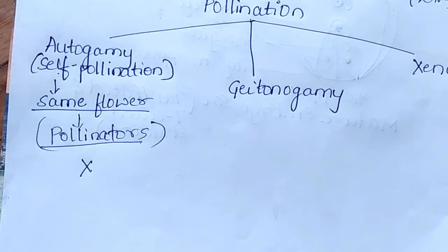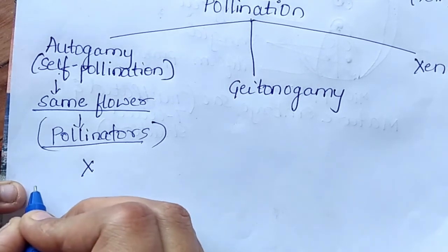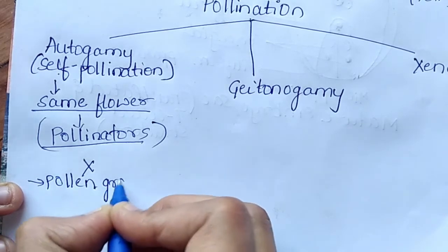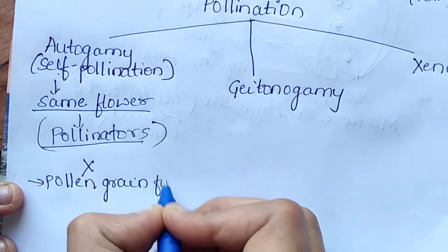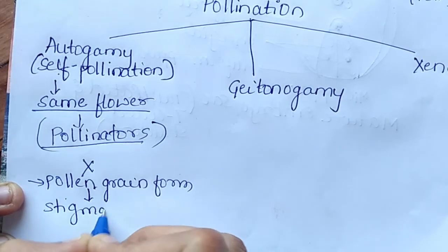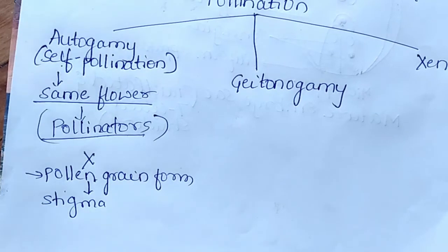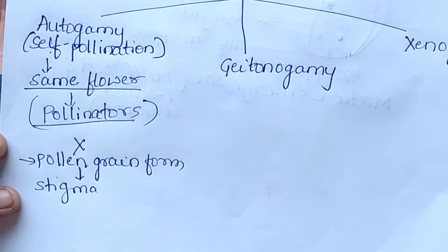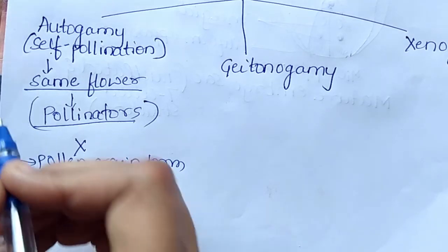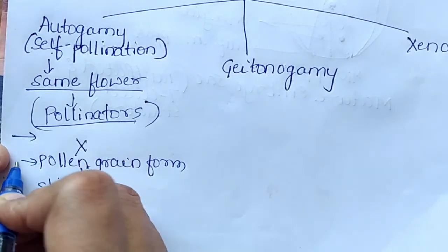For autogamy, pollen grains should be received by the stigma at the same time — that is, stigma receptivity and pollen release must coincide. There are three main criteria for autogamy to occur successfully.